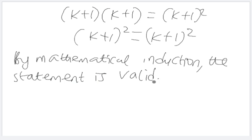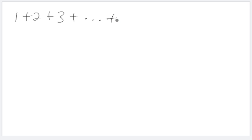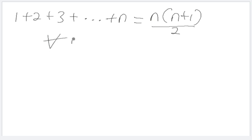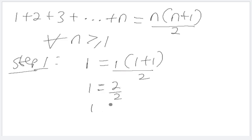Now let's look at the second example. Use mathematical induction to show that one plus two plus three plus ... plus n equals n times (n plus one) over two, for all integers n greater than or equal to one. Step one: check if it is true for n equals one. We have one equals one times (one plus one) over two, which gives one equals two over two, so one equals one. This is true.